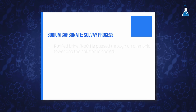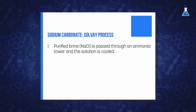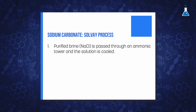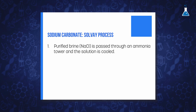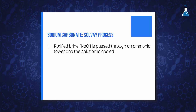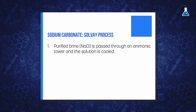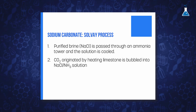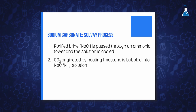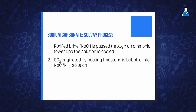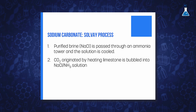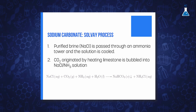In the Solvay process, the brine used needs to be concentrated to at least 30% by solar evaporation and impurities must be removed by precipitation. The purified brine is then passed through an ammonia shower to be saturated with ammonia, and the solution is cooled because the dissolving process is exothermic. Next, carbon dioxide produced by heating limestone is pumped into the sodium chloride solution saturated with ammonia, yielding sodium hydrogen carbonate, as shown in the following reaction.